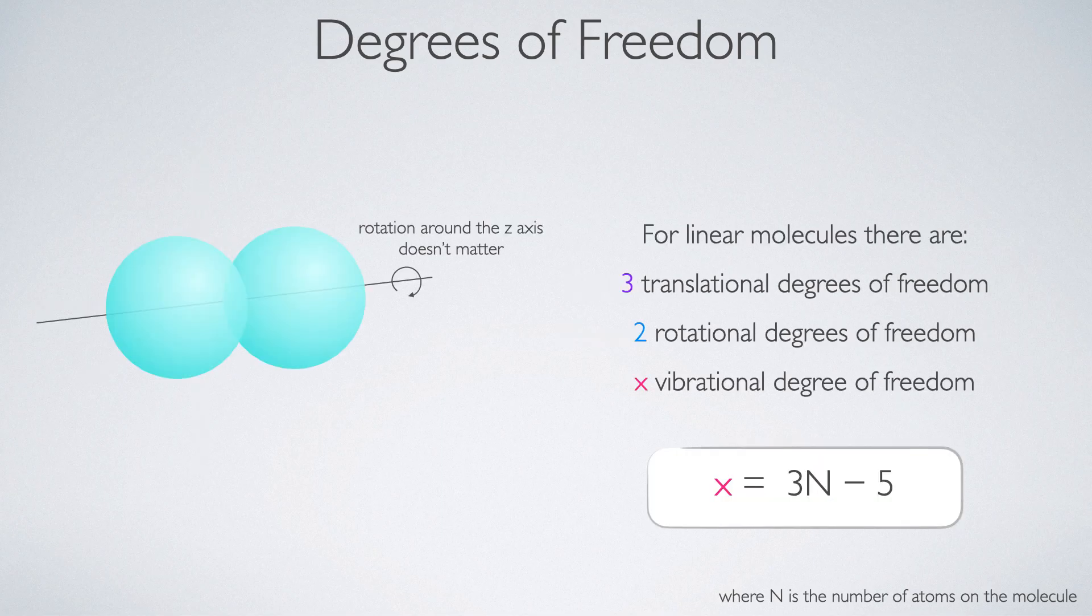Now for linear molecules, by the time I make the molecule, I still have three translational degrees of freedom. I now have two rotational degrees of freedom, and I have a number of vibrational degrees of freedom, which depend upon the number of atoms in my molecule. So here in my case of this diatomic molecule, I have two atoms, so 3n minus 5 is 1. I have one vibrational degree of freedom.